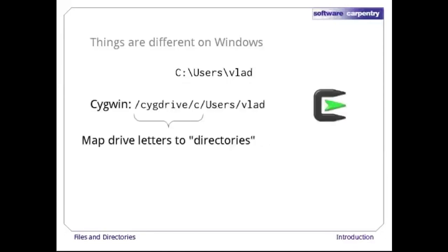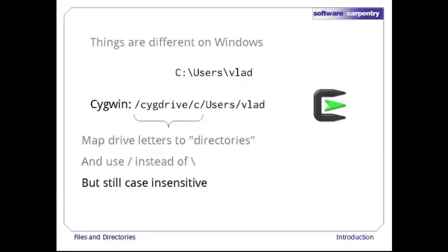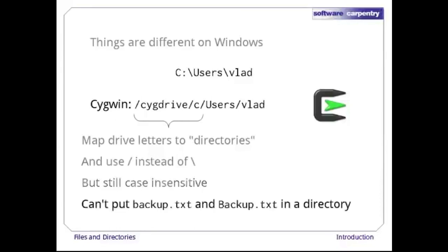The Cygwin package tries to make Windows paths look more like Unix paths by allowing us to refer to the C drive as /cygdrive/c instead of C:, although the latter usually works too. It also allows us to use forward slash instead of backslash as a separator. But paths are still case-insensitive, which means that if you try to copy files called backup.txt in all lowercase and Backup.txt with a capital B into the same directory, the second will overwrite the first.